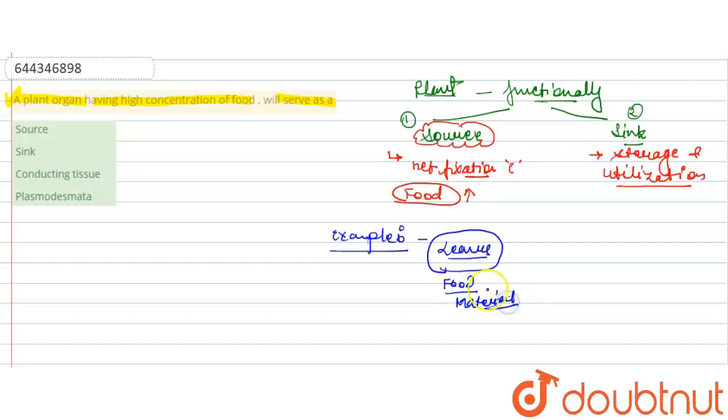But this food material is needed in other parts of the body. From this leaf, the food material is transported to the root cells of the plant. This process is done with the help of phloem.